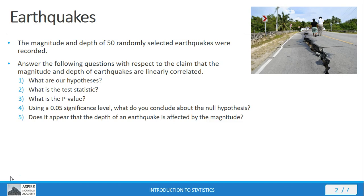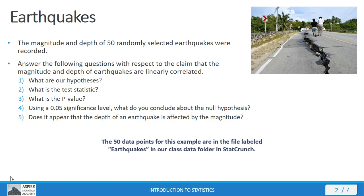First, what are our hypotheses? What's the test statistic? What's the p-value? Then, using a 5% significance level, what do you conclude about the null hypothesis? And does it appear that the depth of an earthquake is affected by the magnitude? This file is located inside our class folder in StatCrunch, so feel free to go in there and grab it.